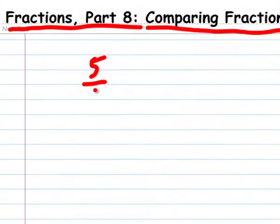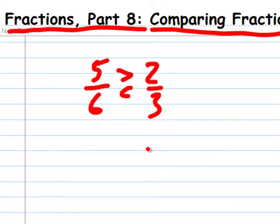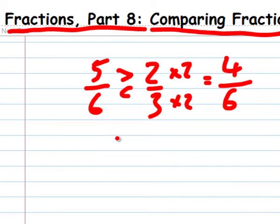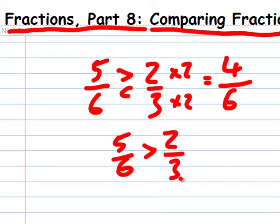How about five sixths and two thirds? Well, they're hard to compare like this, but six is three times two, and you already know that you can multiply a fraction by the same number on the top and the bottom and get an equal fraction. So let's try it. Two times two is four, and three times two is six, so two thirds equals four sixths, and five sixths is greater than four sixths, so five sixths is greater than two thirds.